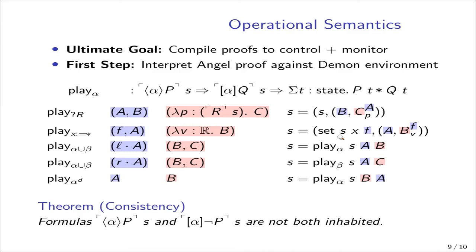Let's start moving back towards the applied side by giving a big step operational semantics. We said in the intro that our ultimate goal is synthesis or extraction. Basically, that is a compiler from proofs to control and monitoring code. An excellent first step anytime you want a compiler is to write an interpreter. So we interpret an angel proof against a demon environment. If you give me an angel who's playing game alpha with condition P, and a demon who's playing the same alpha, maybe with a different goal Q, our semantics will then compute the final state T and will actually prove that both of their goals hold in that state. This is a little bit subtle just because we're thinking of this as a non-cooperative game. But if their goals don't conflict, they can actually both meet their goal.